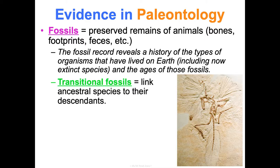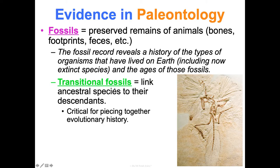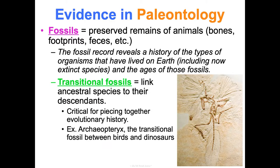The really important thing we've found are transitional fossils, which link ancestral species to their descendants. We can use them to piece together evolutionary history — how we got from an extinct species to what we have now that seems related. An example is Archaeopteryx, pictured here. It is a critical find in the fossil record — a transitional fossil that helps connect modern-day birds to dinosaurs.